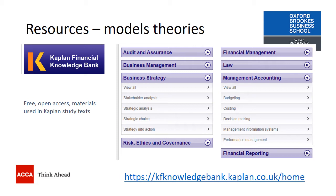Just in case you don't have your ACCA study texts available, there is a resource available online — the Kaplan Financial Knowledge Bank. This is an open access resource, meaning it's free to use, and it's a summary and bringing together of the materials used in Kaplan study texts. On that website, information has been gathered under different headings: management accounting, strategy, risk, ethics and governance. If you click through, you'll be able to identify models that are relevant to the topic that you are actually investigating and researching.